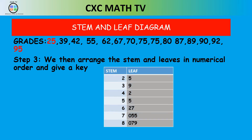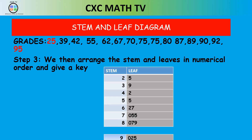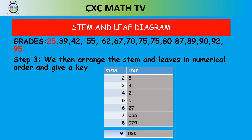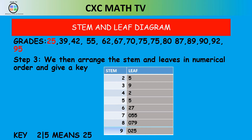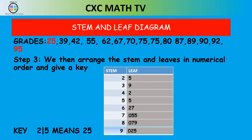In the 30s, the next lowest is 39, so we put 9 in the leaf. In the 40s there's only 42, so we put 2 in the leaf, since 4|2 means 42. For 55 we have 5|5. For 62 and 67 we put 2 then 7 — 6|2 means 62 and 6|7 means 67 — and we continue for the rest of the data.